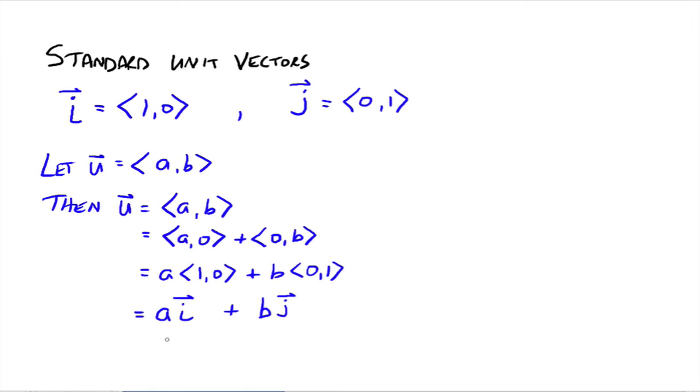And so, we've got this new notation. This ai plus bj is another way that your vectors could be written. It's the ij form of vectors. So, if u was equal to 3 comma 5, well, we could also write that as 3i plus 5j. Both these notations mean the same thing. It's the same vector. So, it's just another way, another form that you need to be familiar with, the ij form of the vectors.